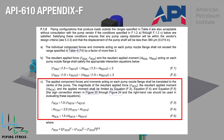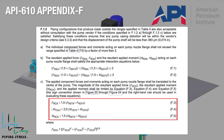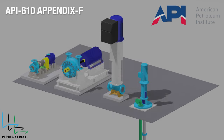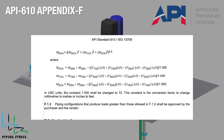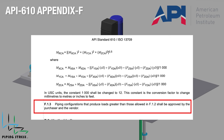The magnitude of the resultant applied force, moment, and the applied moment shall be limited by equations F3, F4, and F5. Finally, F1.3 states that piping configurations producing loads greater than those allowed in F1.2 shall be mutually approved by the purchaser and vendor.